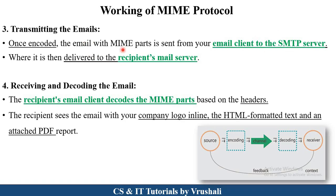MIME just encodes the data, but the actual sending and receiving is done by the SMTP server. The SMTP server delivers this mail to the receiver's mail server. On the receiver's side, the receiver receives the mail and decodes it back into HTML, PDF, and image format. So encoding and decoding operations are provided by the MIME protocol.